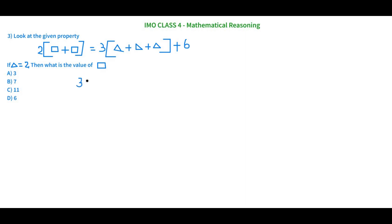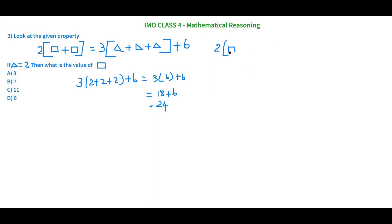On the right-hand side we have 3 times (triangle plus triangle plus triangle) plus 6. Substituting triangle equals 2: 3 times (2 plus 2 plus 2) plus 6. That is 3 times 6, which is 18, plus 6 equals 24. So the value of the right-hand side is 24. Now the left-hand side is 2 times (rectangle plus rectangle) equals 24.